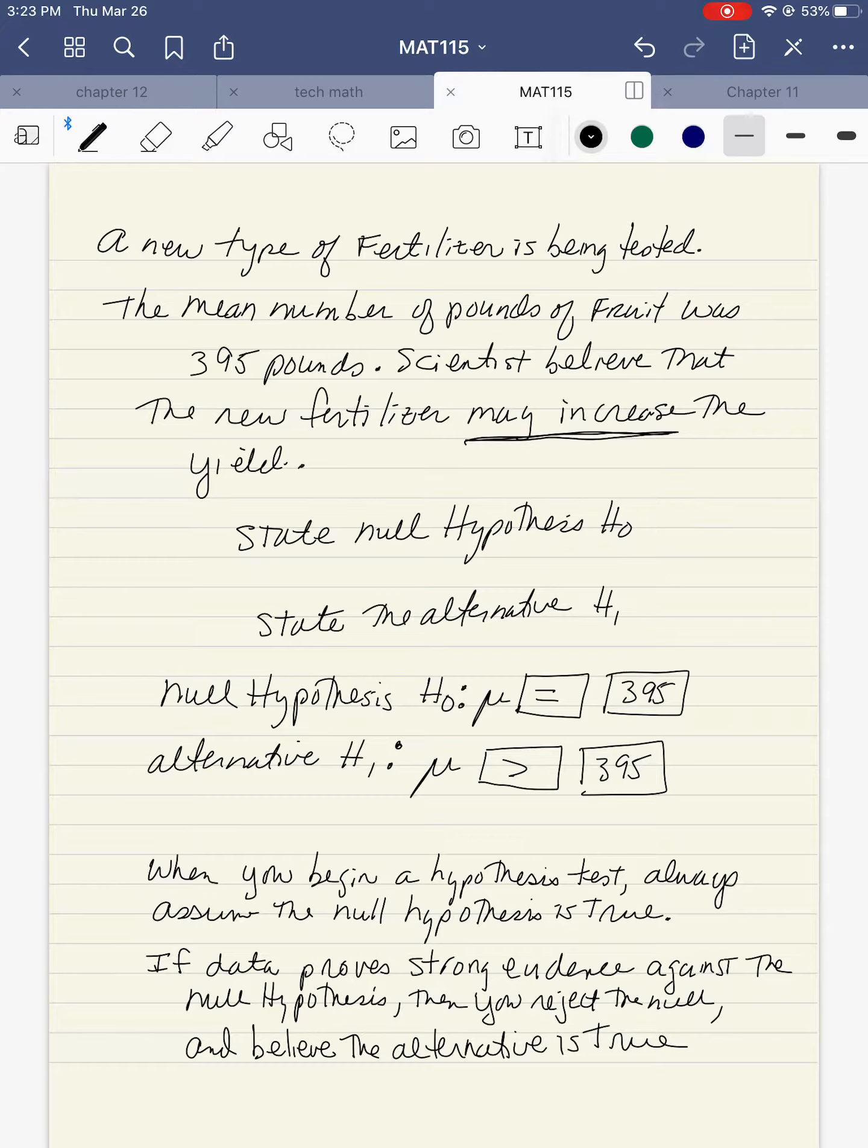As an example, a new type of fertilizer is being tested. The mean number of pounds of fruit was 395 pounds. Scientists believe that this fertilizer may increase the yield. State the null hypothesis H0 and the alternative hypothesis H1. The null hypothesis H0 would be the mean equals 395. The alternative hypothesis, because it says may increase, is greater than 395.